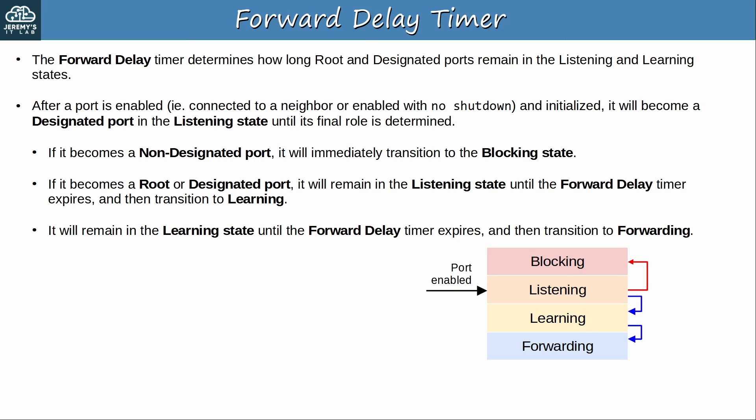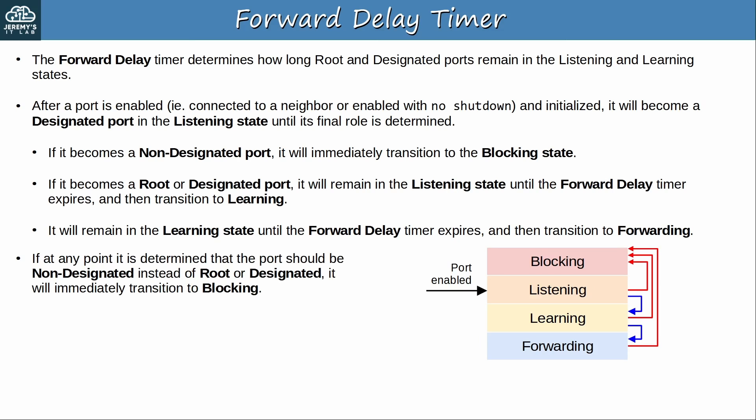Rapid STP speeds this up quite a bit, and for ports connected to end hosts you can use port fast, but the standard STP process takes 30 seconds. Note that if at any point it is determined that the port should be non-designated instead of root or designated, it will immediately transition to blocking. And if it's determined that a non-designated port should become root or designated, it will transition to forwarding via listening and learning, via the same 30 second process.